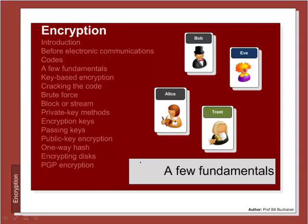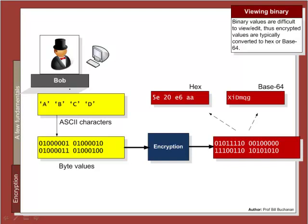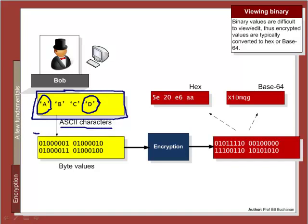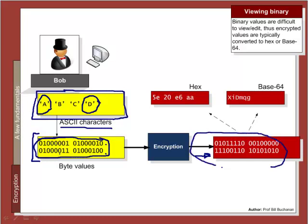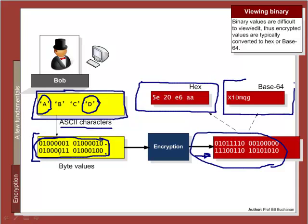Let's look at some of the fundamentals involved in encryption. We typically define standard text as plain text, defined in ASCII characters — letters A, B, C, D — which are interpreted by the computer in byte format. The letter A in ASCII is represented as 10000001 in binary, and so on for B, C, D. When we encrypt, we typically encrypt the binary stream, which is then encrypted into a ciphertext. Since it is very difficult for humans to view ones and zeros, we typically view ciphertext in either hexadecimal format or Base64 format.